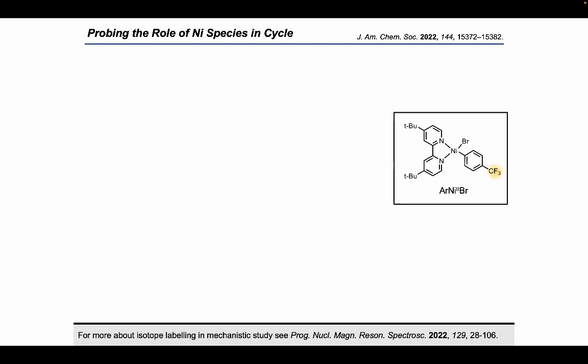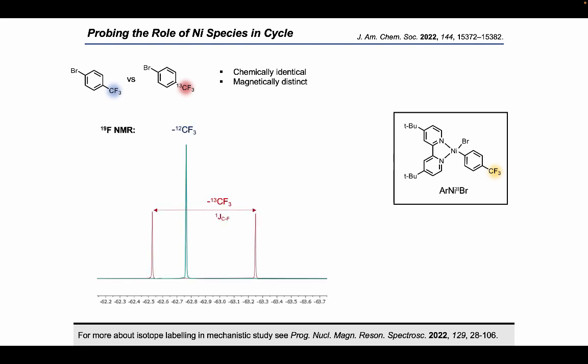Now that we've observed the major nickel resting state during the cycle, we wanted to probe in a bit more detail what exactly it's doing over the course of this reaction. To do this, we used some isotopic labeling studies. We synthesized a carbon-13 labeled version of our starting aryl bromide, where the carbon-13 is on that CF3 position. Now, if you compare this to the normal non-labeled molecule, they're essentially chemically identical. But they're not magnetically identical to each other. This difference in the fluorine NMR is going to carry forward to anything that's formed from this aryl bromide.